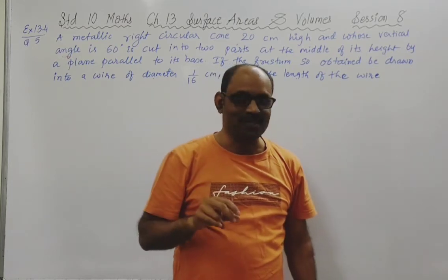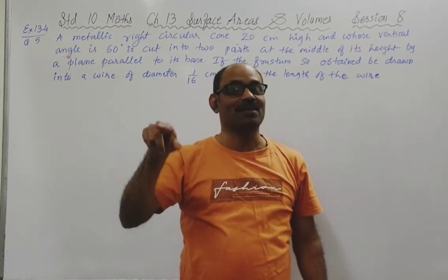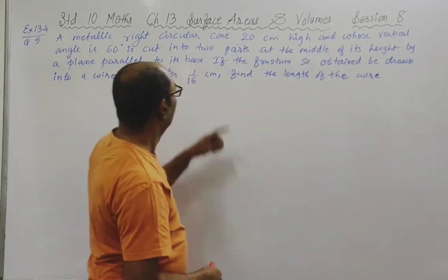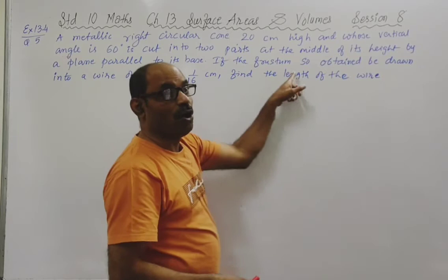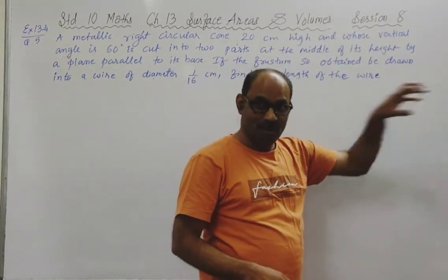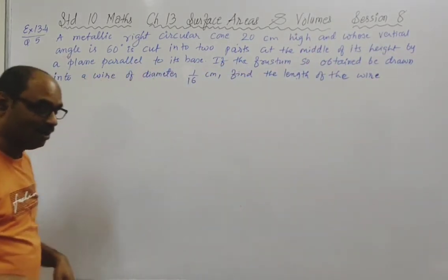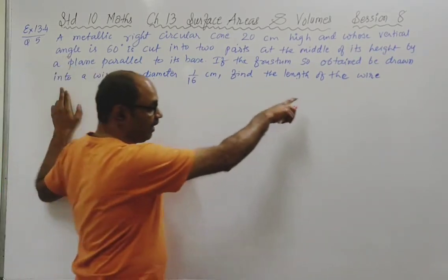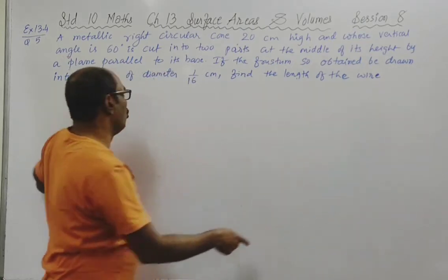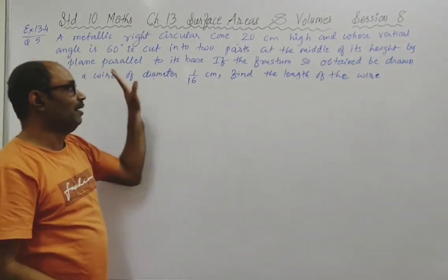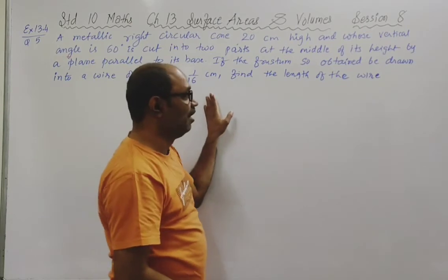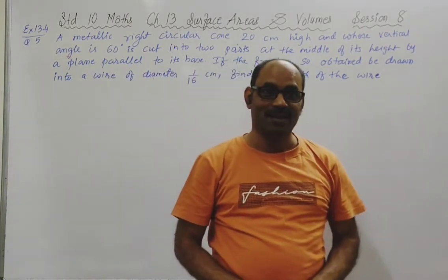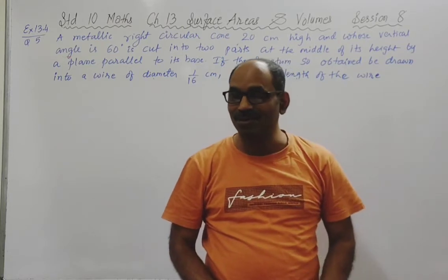The top part is a smaller cone and the bottom part is the frustum of cone. If the frustum of cone so obtained is drawn into a wire of diameter one-sixteenth centimetre, find the length of the wire.